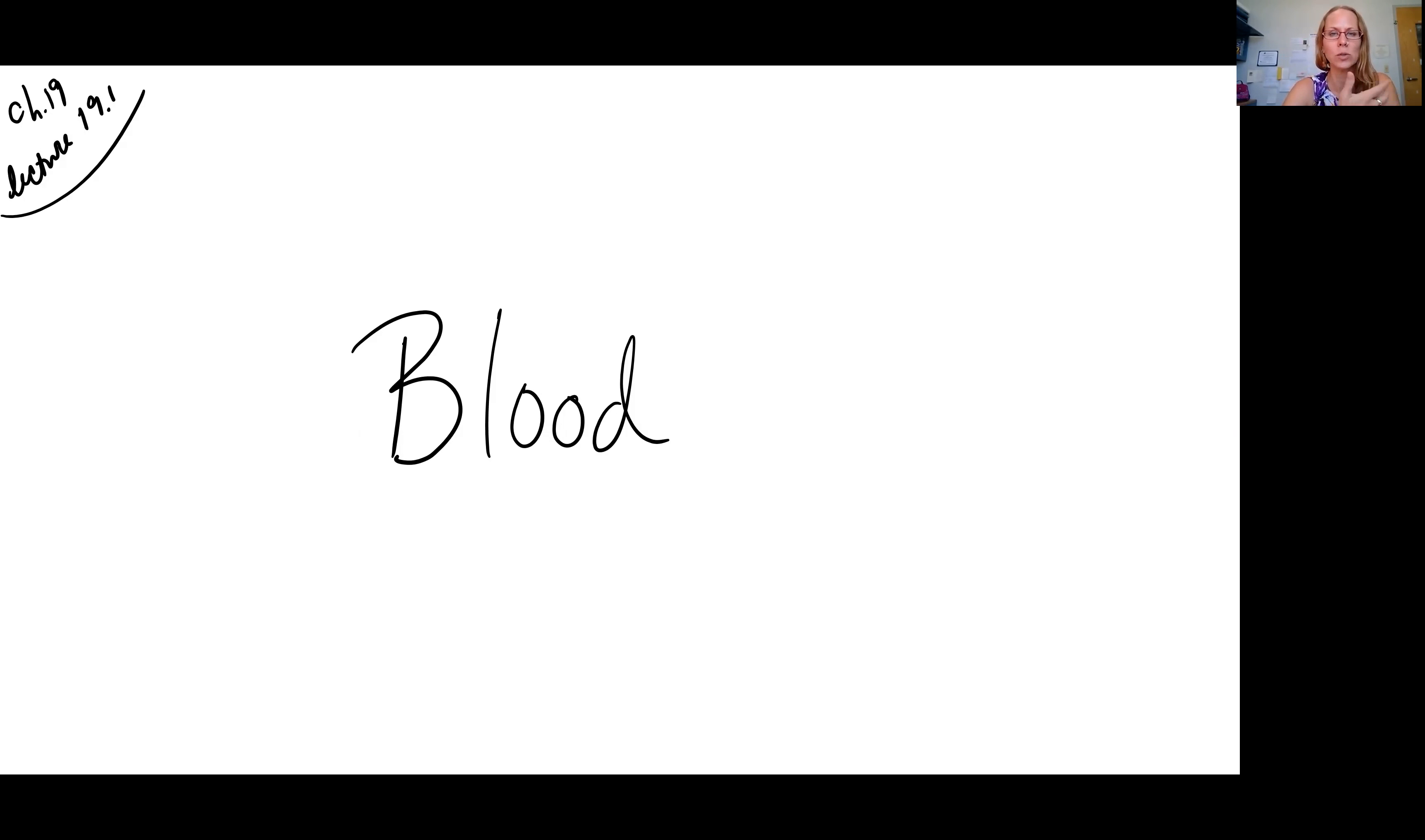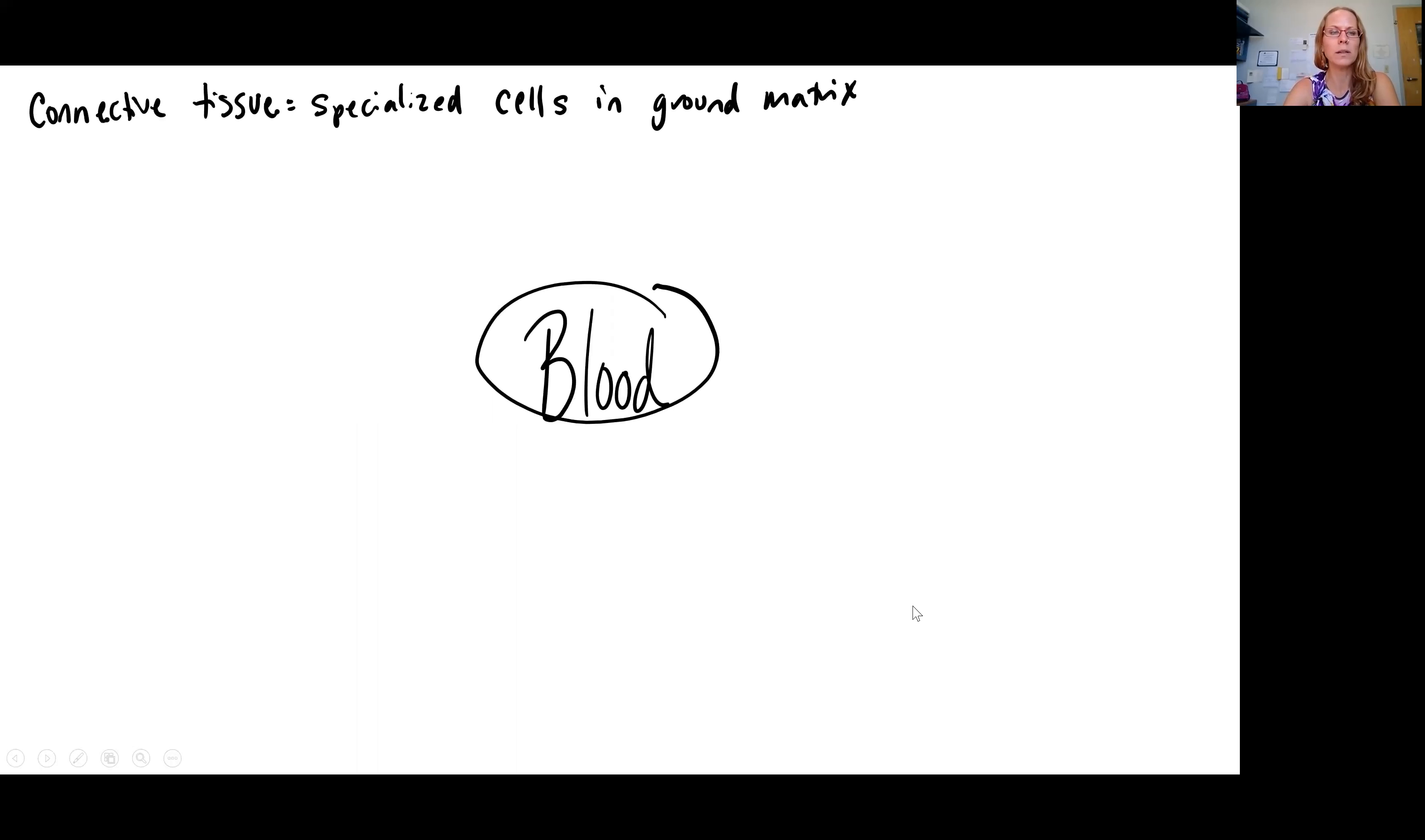So we're going to be looking at the tissue that is the blood and the cells that make up that blood. You've studied blood tissue before when you were first in AMP1. Remember, blood is a fluid connective tissue. Connective tissues, by definition, all include specialized cells located in what is called a ground matrix.